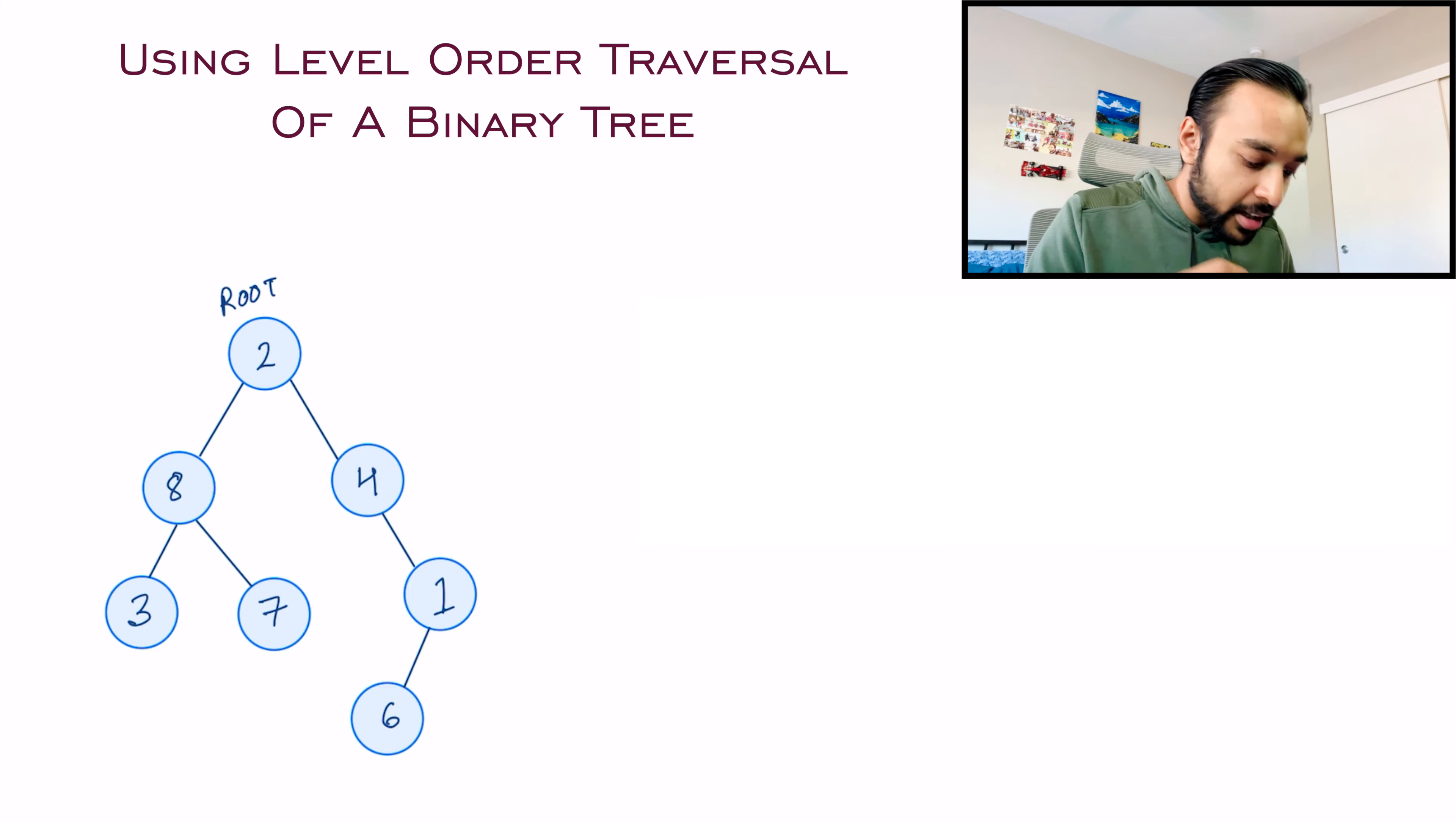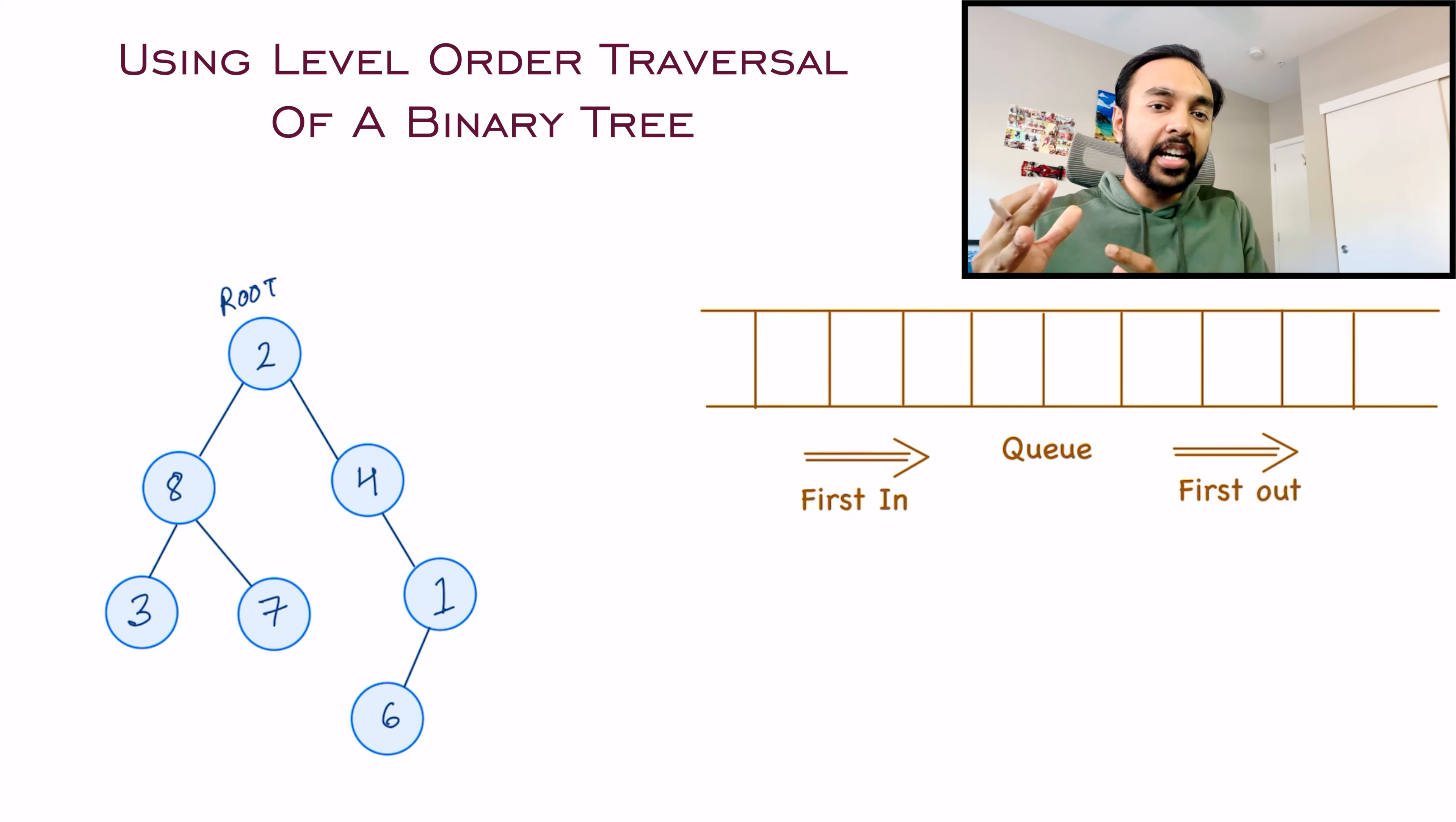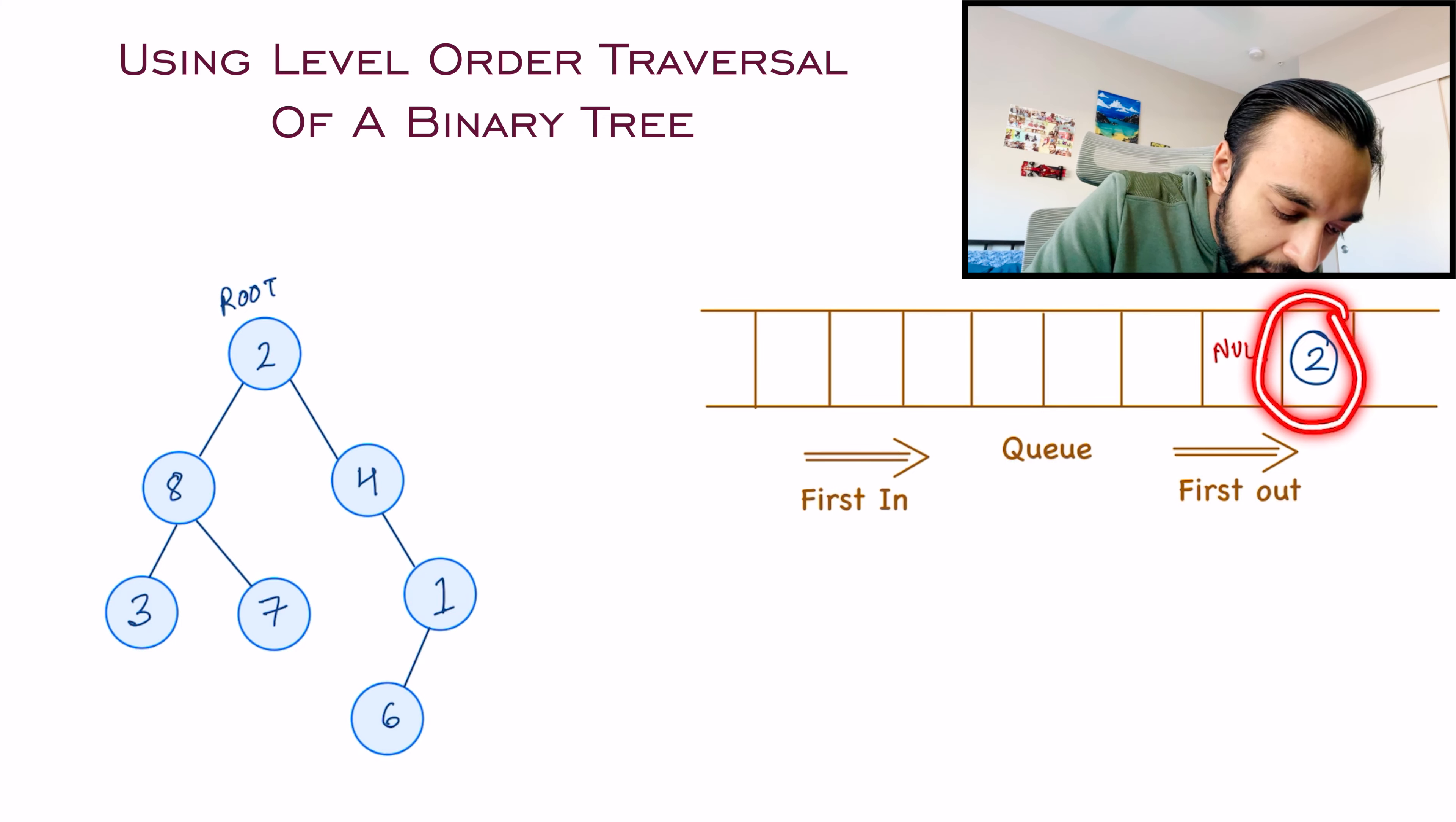To start things off, let us first of all take up our queue data structure that will be used to perform a level order traversal. So I have my queue with me, where all the elements will go in from this side, and they will come out from the other end, because of first in, first out. Now there is a very neat trick which you can use to identify all of the levels. What we're gonna do is, we get the first element and that is two. I will put my two in the queue, and I will also insert a null pointer. What this null pointer will tell me is that as soon as I get a null, that ends a level.